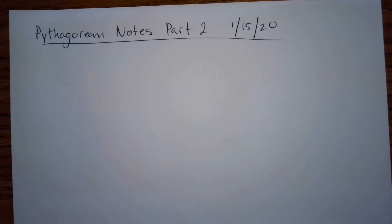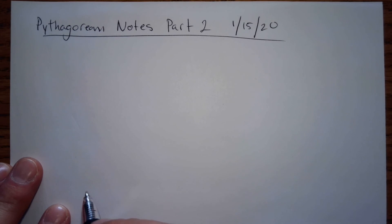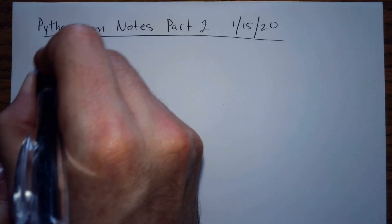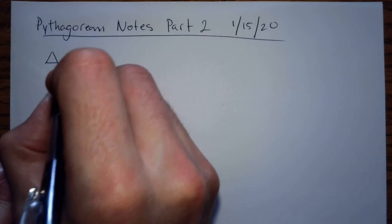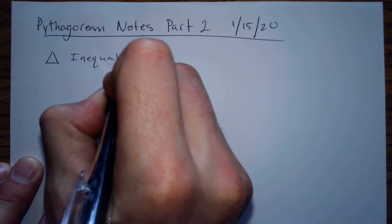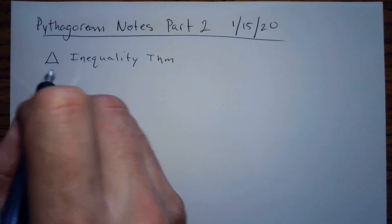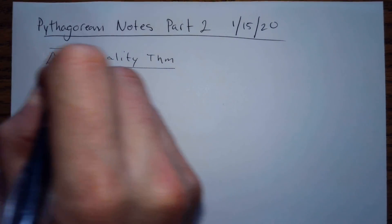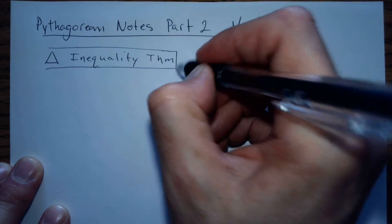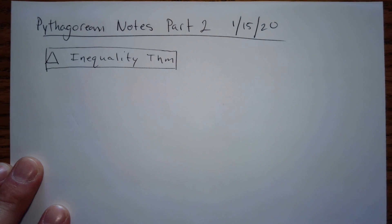So Pythagorean Theorem. Oh, we looked at the Pythagorean Theorem. We're going to look at the Triangle Inequality Theorem. And this is very simple, once you understand it. The Triangle Inequality Theorem says that for any triangle, if you pick two of the sides and add them together,